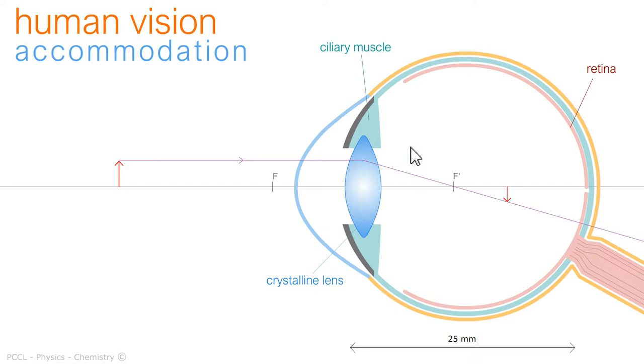It would be necessary to consider that both crystalline lens and cornea comprise the eye's optical system and to assimilate it to a single lens, of which I could represent here the symbol.